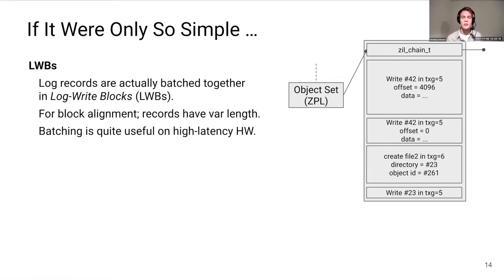We need LWBs for block alignment, and also because log records themselves have variable length. The batching of multiple log records into LWBs can be used to do some tricks on high-latency hardware to make the writes a little less expensive.